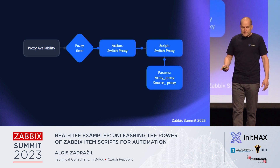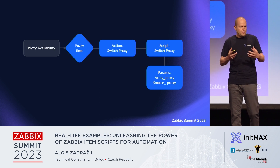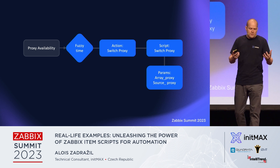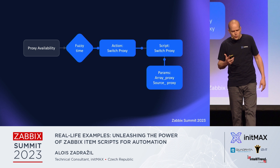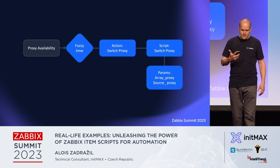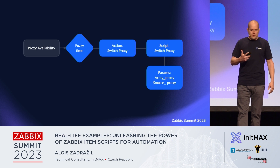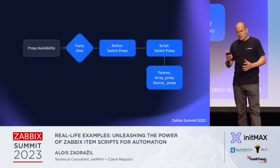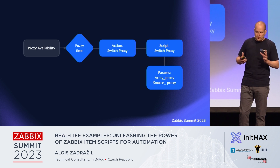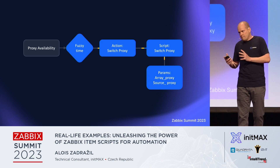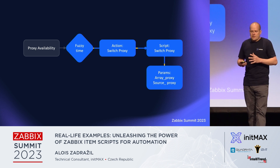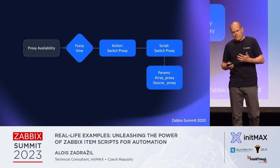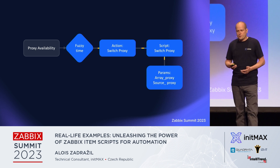The action starts scripts, and the script looks inside configuration. The configuration is stored in macros — I only need two macros: a macro with an array of proxies. I can imagine more than two proxies in the array, but the switching logic will be much more complex. In the simplest case, you have two proxies in the array. You get the proxy ID for the failed proxy and switch it to the next one.